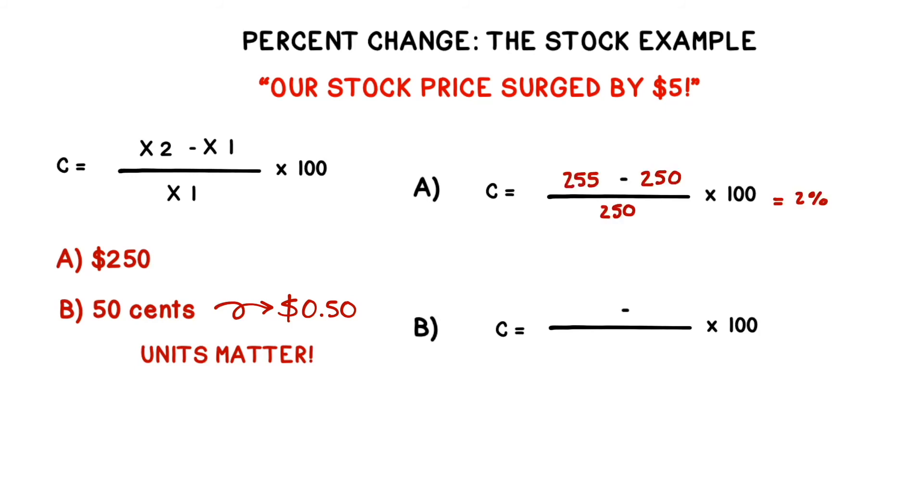If we do out the math, we can see that option B is definitely a surge, but option A? Not so much.